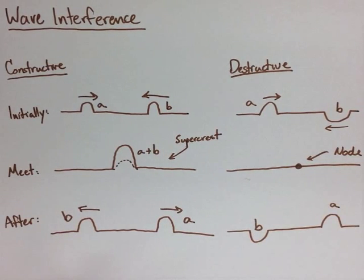That's really all there is to wave interference. Constructive is two waves going towards each other on the same side of a rest position. Destructive is two waves going towards each other on opposite sides of the rest position. Constructive creates a supercrest, and destructive creates a node.